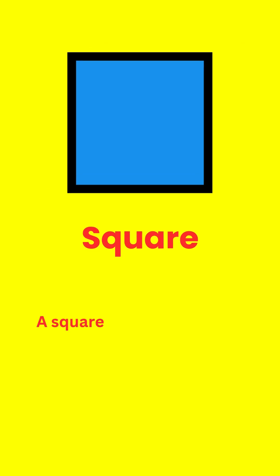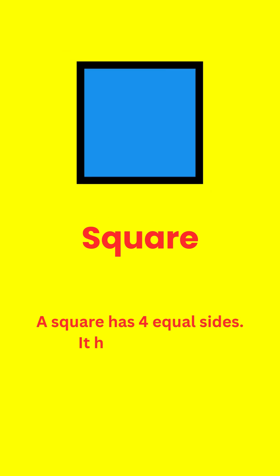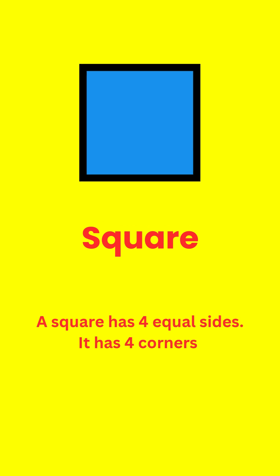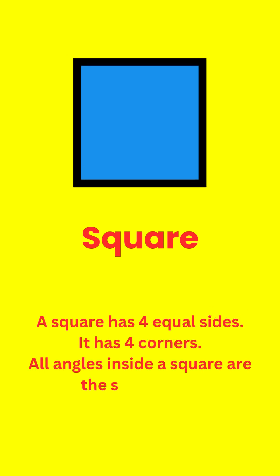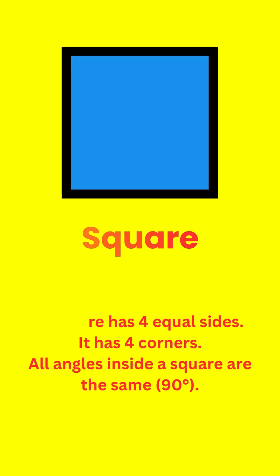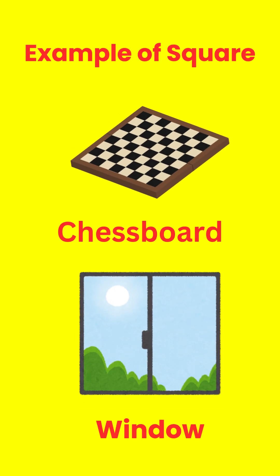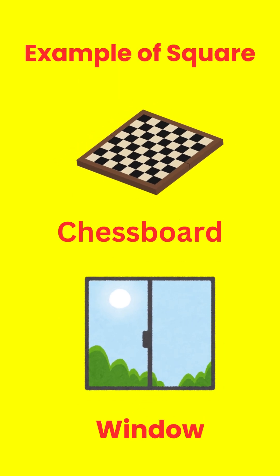Square. A square has four equal sides and four corners. All angles inside a square are the same, 90 degrees. Examples of square in our daily life are chessboard and windows.